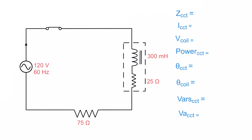Here we go — I've assigned values to the circuit. The source voltage is 120 volts at 60 hertz. This resistor is 75 ohms. The coil has 300 millihenry inductance and a 25 ohm internal resistance. We're going to figure out: the impedance of the entire circuit, the current through the circuit, the voltage across the coil, the power, the phase angle of the circuit, the phase angle of the coil, the reactive power, and the apparent power.